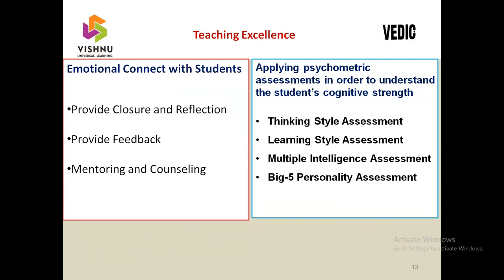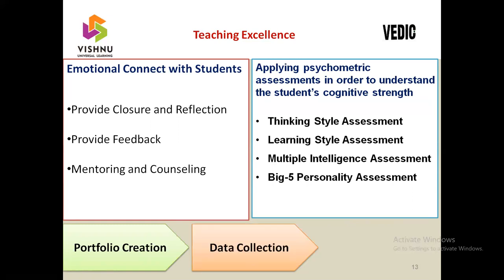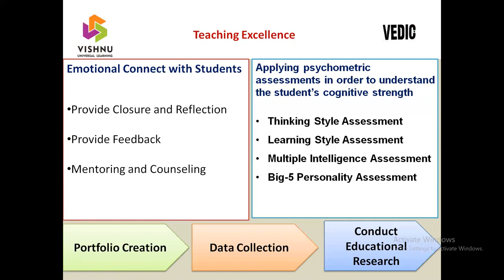Here I will list a few suggestive psychometric assessments: thinking style assessment, learning style assessment, multiple intelligence assessment, and Big Five personality assessment. You can administer these among your students to understand them in a much more meaningful and better way. Among all these, you can create a portfolio, move toward data collection, conduct educational research, announce your innovativeness, and present the key factors which help towards better learning at conferences and in educational journals.